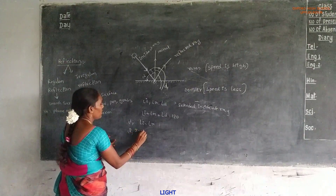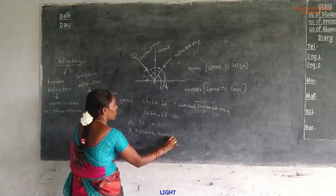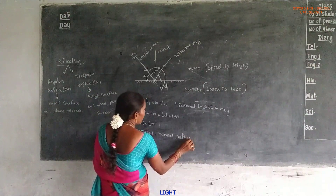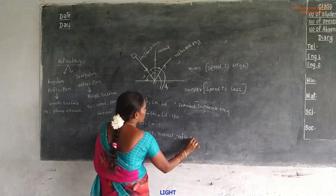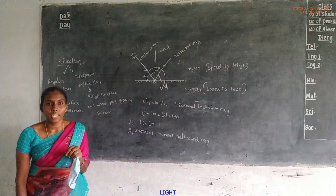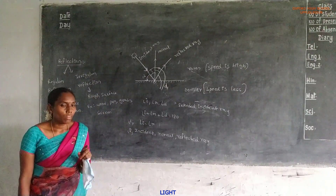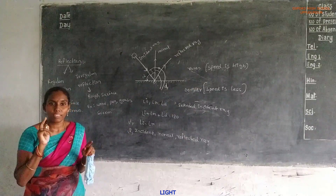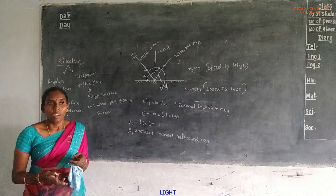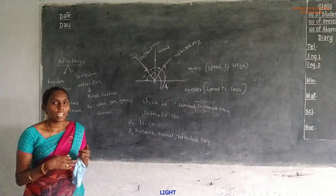Incident ray, normal at the point of incidence, and reflected ray are all present in the same plane. These are the two laws of reflection of light. Reflection means light comes back into the same medium. Reflection always takes place in one medium — either rarer or denser. Rarer means the speed of light is very high and denser means the speed of light is very less.